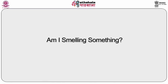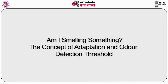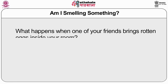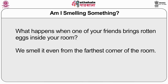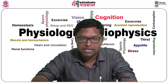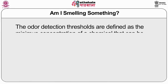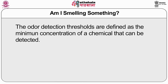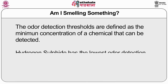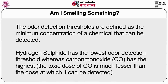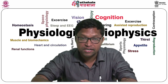Now let's cover adaptation and odor detection threshold. When a friend brings rotten eggs into your room, you can smell it even from the farthest corner — this is explained by the concept of odor detection threshold, defined as the minimum concentration of a chemical that can be detected. Hydrogen sulfide has the lowest odor detection threshold, whereas carbon monoxide has the highest. Importantly, the toxic dose of carbon monoxide is much less than the dose at which it can be detected. There are mainly seven primary odors.